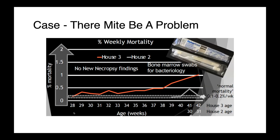In this figure, you can see the average weekly mortality in this particular facility — the age in weeks of the birds and the percent mortality on a weekly basis. The normal mortality of 0.1 to 0.2 percent per week is within the expected range. This particular flock was experiencing a much elevated rate; here in red, house 3 was getting up around 1%, and house 2 was also somewhat elevated.